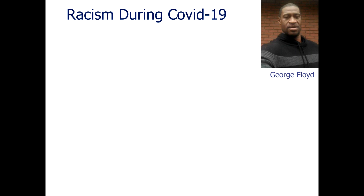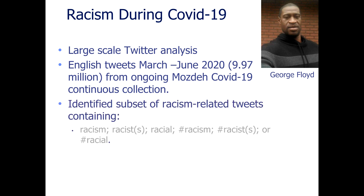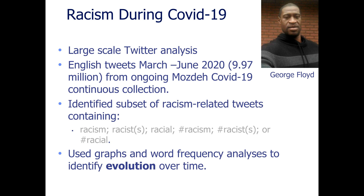My large-scale example is about racism during COVID-19. It's a large-scale Twitter analysis of nearly 10 million tweets from an ongoing collection of tweets related to COVID-19 between March and June 2020, during the early days of the public reaction to it in the UK at least. For this project we identified a set of racism-related tweets within the COVID-19 tweets — those containing any of the words in an identified list — and used graphs and word frequency analysis to identify the evolution of debates about racism over time, as reflected on Twitter.